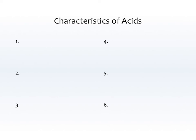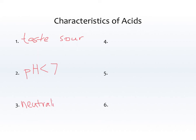Now let's talk about some characteristics of acids — general physical properties you can observe in a lab. First, taste: acids taste sour. Think of orange juice, lemon juice, or vinegar. Acids have a pH less than 7, which you can measure with a pH meter. Acids also neutralize bases.